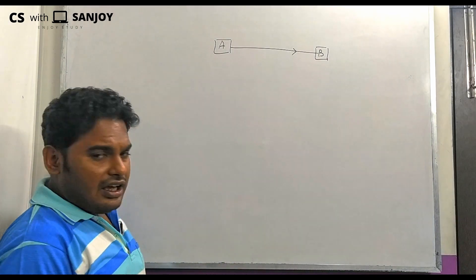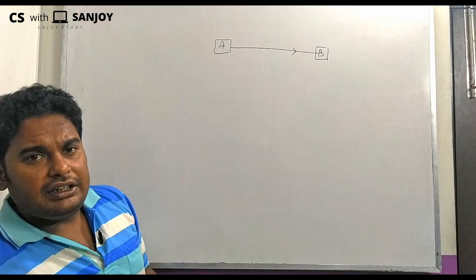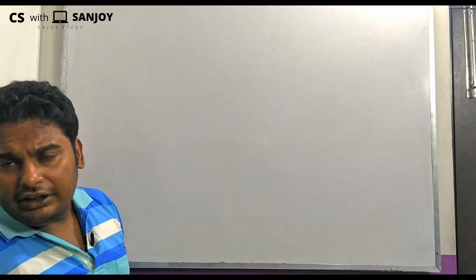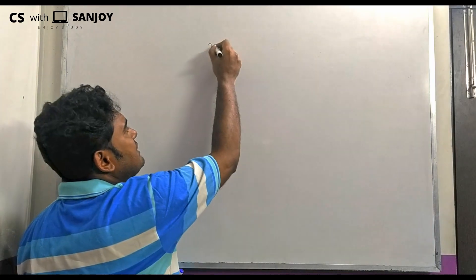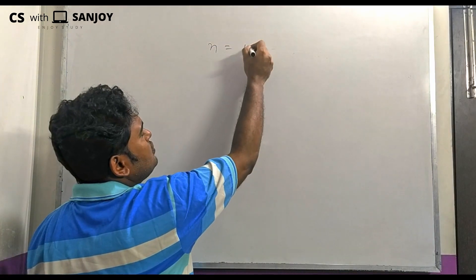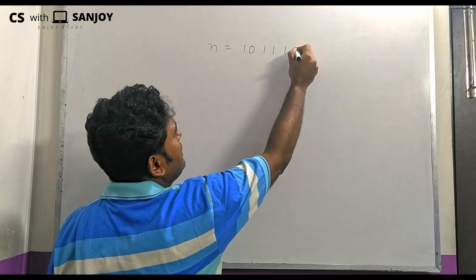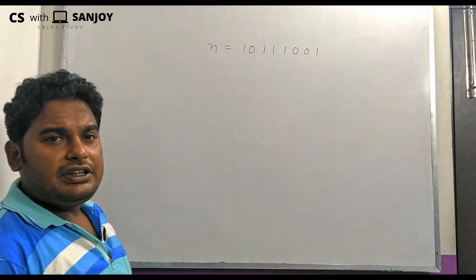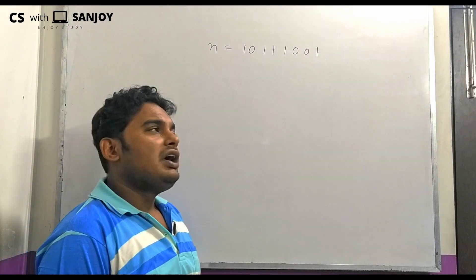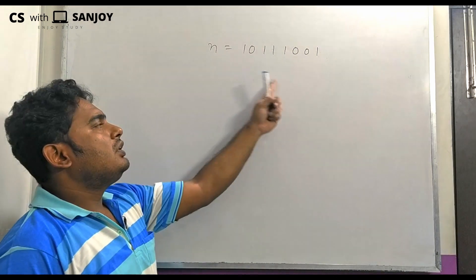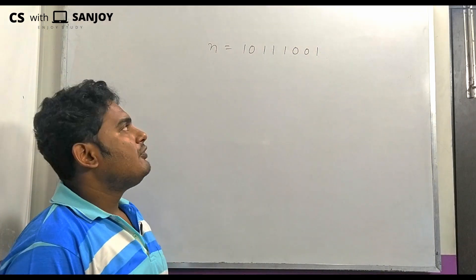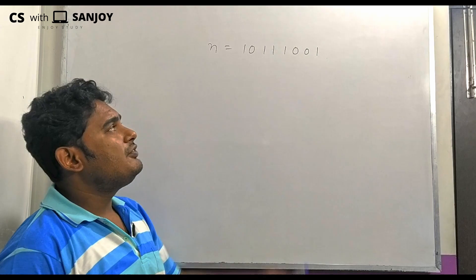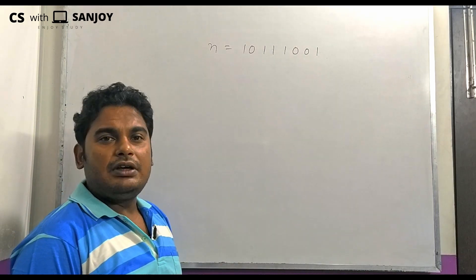Let us consider an n-bit example. Suppose we have n = 10111001. So this is an 8-bit information and we want to compute the Hamming bits from this 8-bit information.